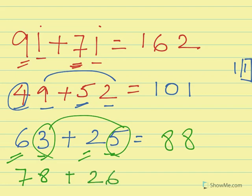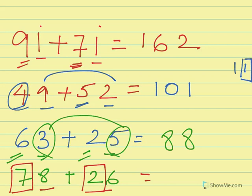Final example: 78 plus 26. We can see that 8 plus 6 is a carrying number, so 1 comes to the tens: 7 becomes 8, and 8 plus 2 is 10. The end number of 8 plus 6 is 4, so our answer is 104. With practice this method will become easier and faster. Hope you find this helpful — thanks for watching, keep on counting!